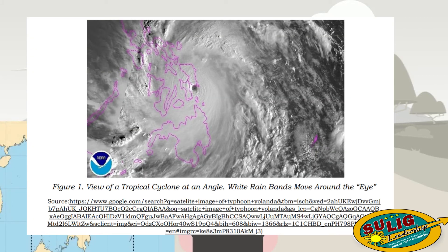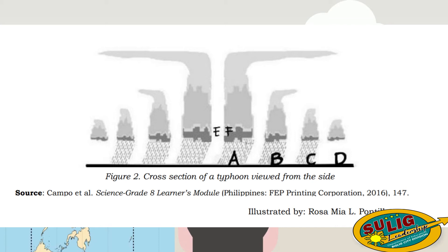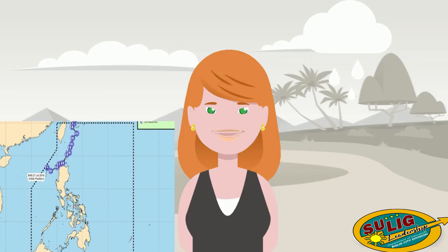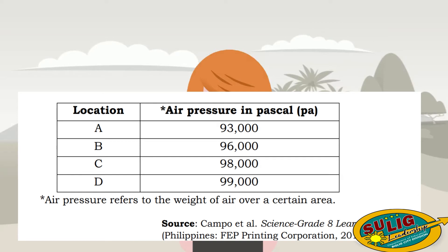Figure 1 shows the view of a tropical cyclone at an angle with white rain bands moving around the eye, while Figure 2 shows the cross-section of a typhoon viewed from the side. Location A is within the eye of the typhoon; B, C, and D are locations getting farther from the eye. The air pressure varies at different locations. Location A, within the eye, has the lowest air pressure at 93,000 Pa, compared to Location B with 96,000 Pa and Location C with 98,000 Pa. Location D, the farthest, has the highest air pressure at 99,000 Pa.